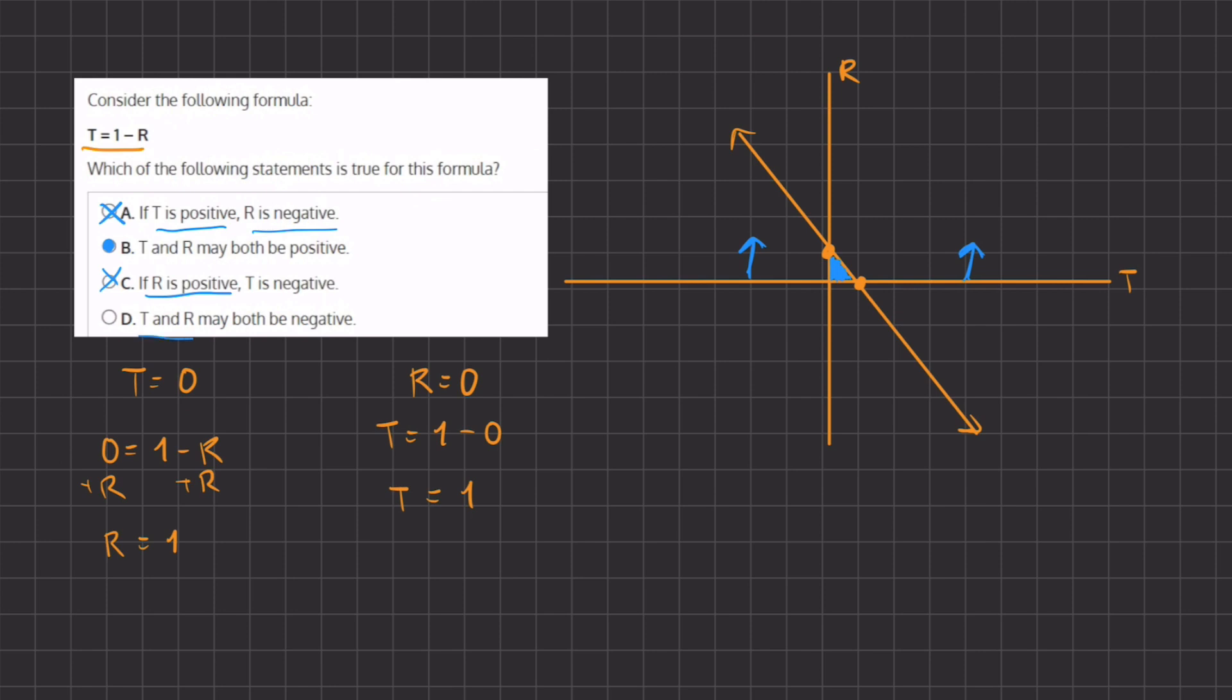d states that t and r may both be negative. There is no area where both the r and the t are negative, because where the t is negative is on this side of the graph. It's going to be this side. And where r is negative is in this area. So, the only area that they can both be negative is in this fourth quadrant. And because the function does not reach this quadrant, that means that d is incorrect and will be eliminated. And that leaves us with b being our final answer.